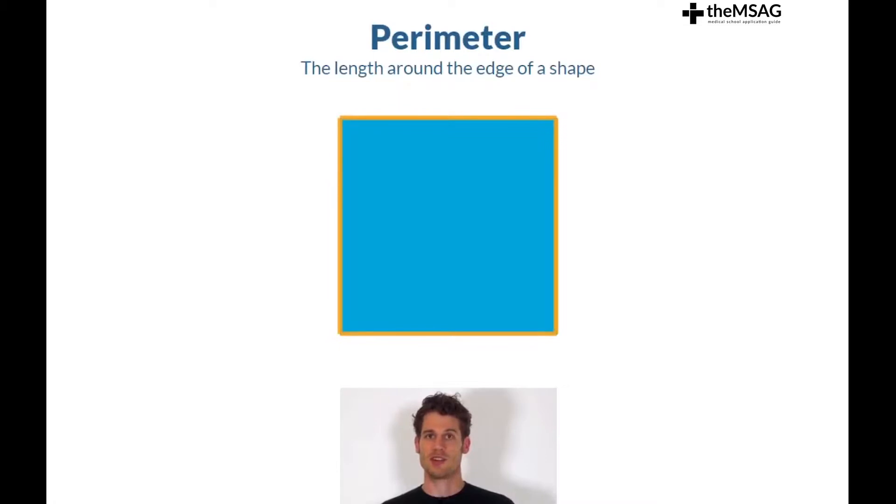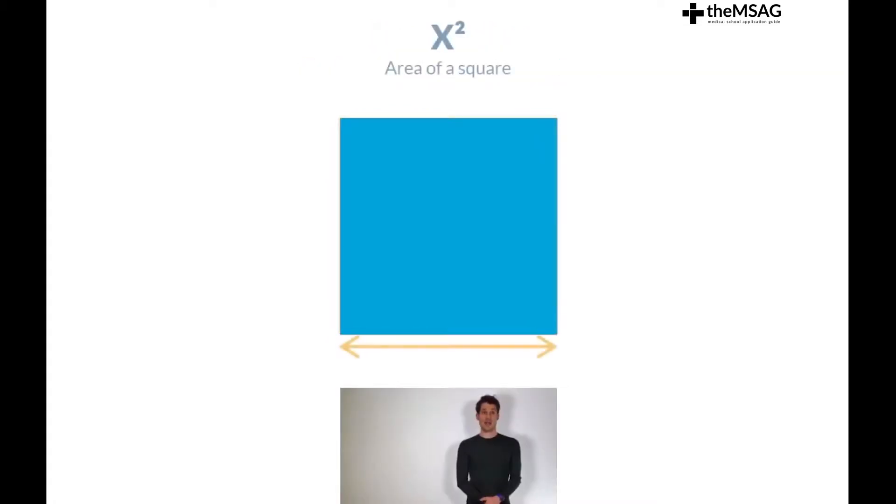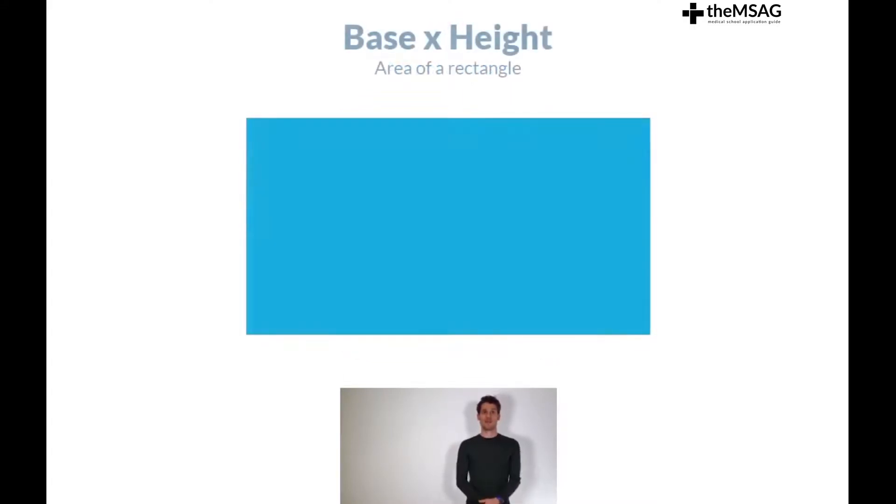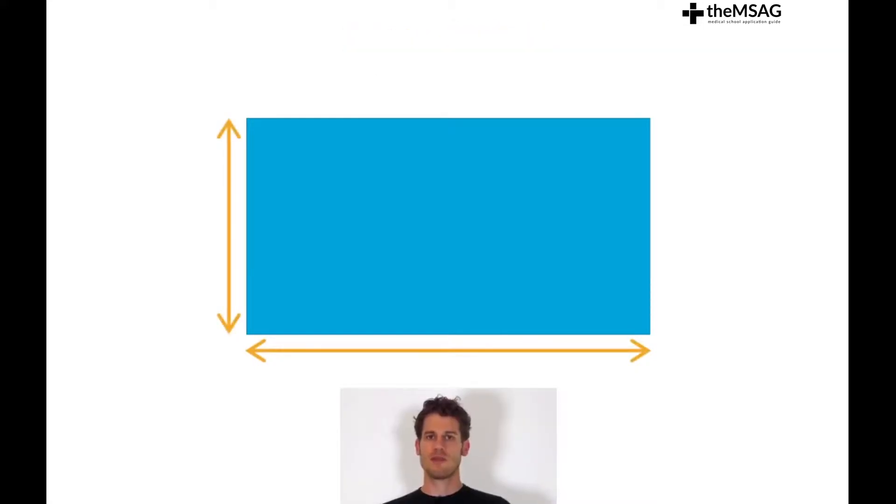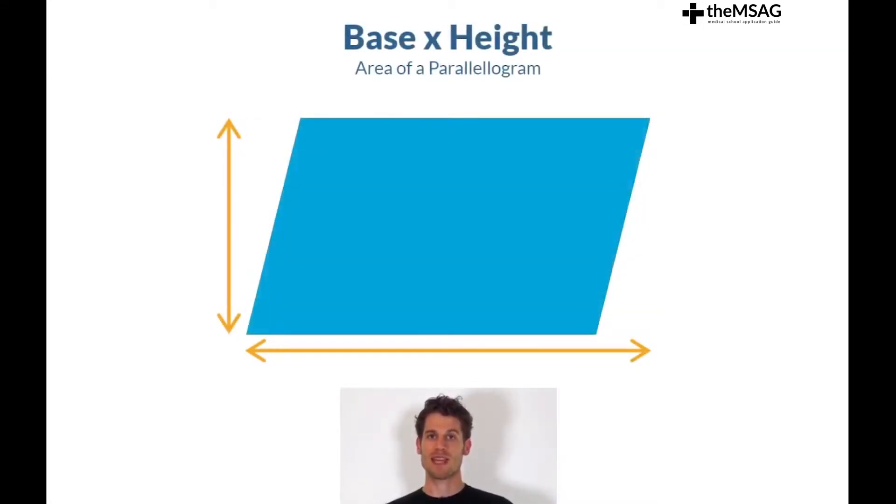First you probably already know that the perimeter means the length of the edge of a shape and that the area of a square is x squared where x is the side length of the square. You may already be very familiar with the fact that a rectangle is simply base times height but did you remember that the area of a parallelogram is base times height also?